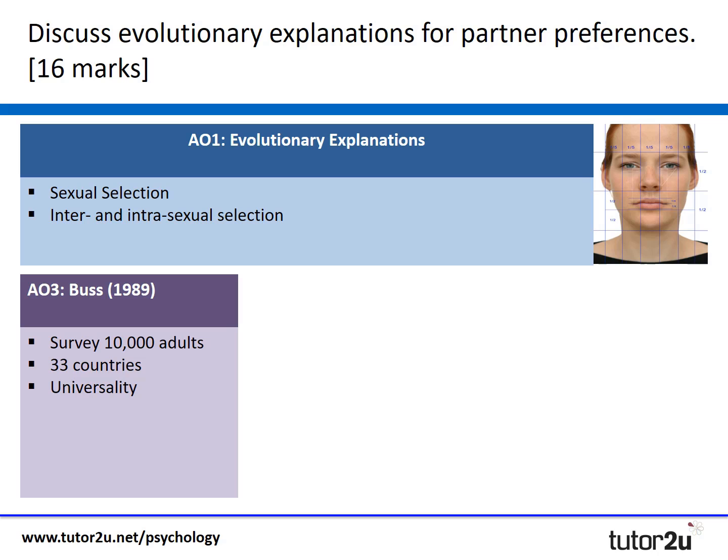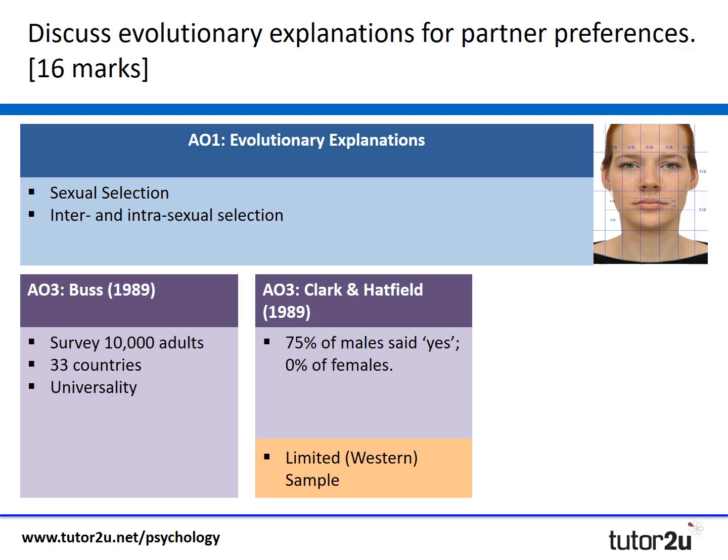In terms of my AO3 points, I'd probably draw on the famous Buss study, which demonstrates the universality of some partner preferences and how that supports the idea of an evolutionary explanation. I'm also going to use Clark and Hatfield's very famous study as further support, but I am going to add in a methodological criticism in terms of the western sample they've used and the ideas of cultural bias.